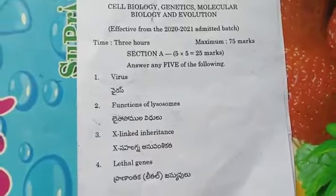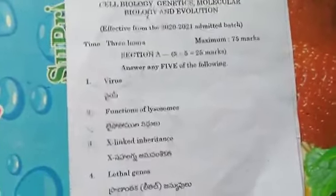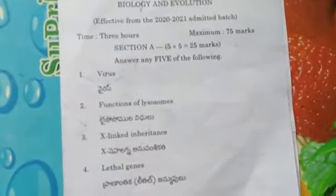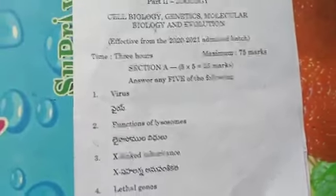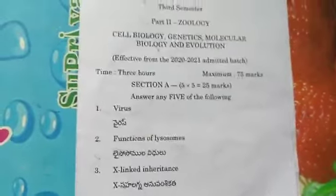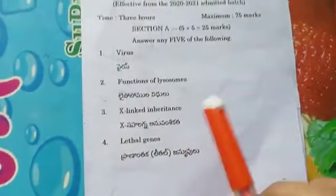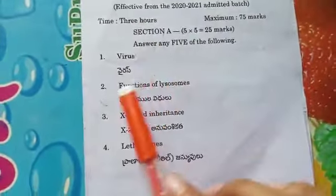Hi friends, welcome to my channel. I am going to explain the paper B.Sc. Degree 2022, 3rd year in Zoology. I will explain the paper in Zoology.